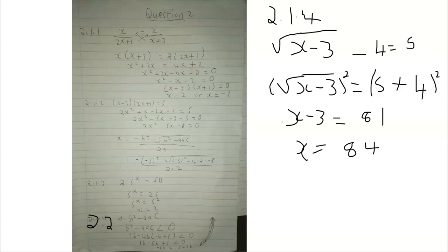For 2.1.2, I simplified and moved 5 to the other side to get a trinomial. Because the question asked us to round to the nearest two decimal places, I used the quadratic formula, substituting the values on the calculator to get the answer for plus and then for minus — giving two solutions.